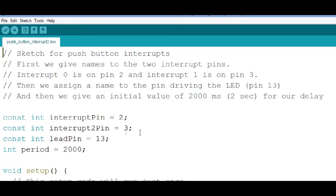Here's the sketch. We've got a couple of interrupts. So we have an interrupt pin on 2. And then we have another constant here. Interrupt 2 pin is going to be on pin 3.